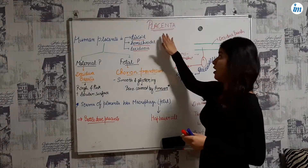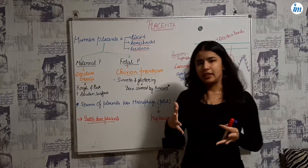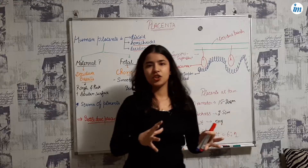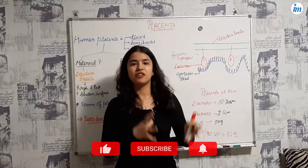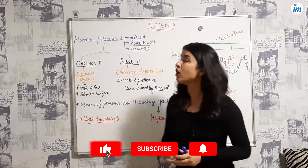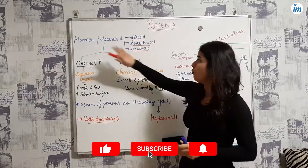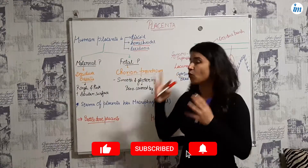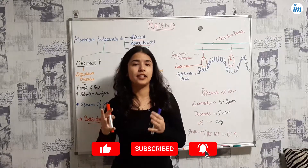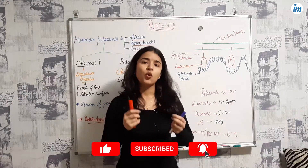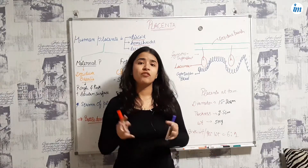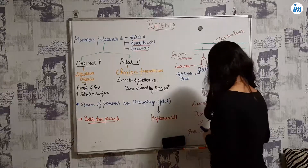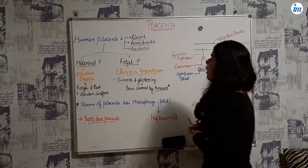Generally, what is placenta? In humans, it is only the connection between the fetus and the mother. Human placenta is generally discoid, hemichorial, and deciduous. Let's discuss the meaning of these three terms in detail.